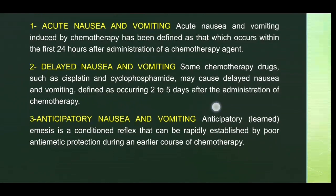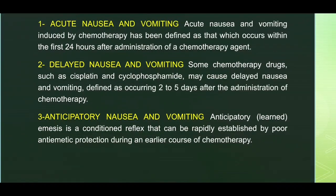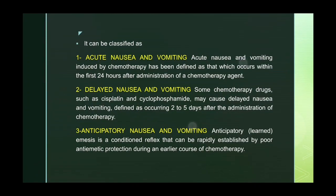Anticipatory nausea and vomiting develops as a conditioned reflex established by poor anti-emetic protection during an earlier course of chemotherapy. The patient on a regular chemotherapy protocol may develop nausea and vomiting just one day before their scheduled chemotherapy — this is anticipatory nausea and vomiting. To summarize: within 24 hours is acute, two to five days is delayed, and just before starting is anticipatory.